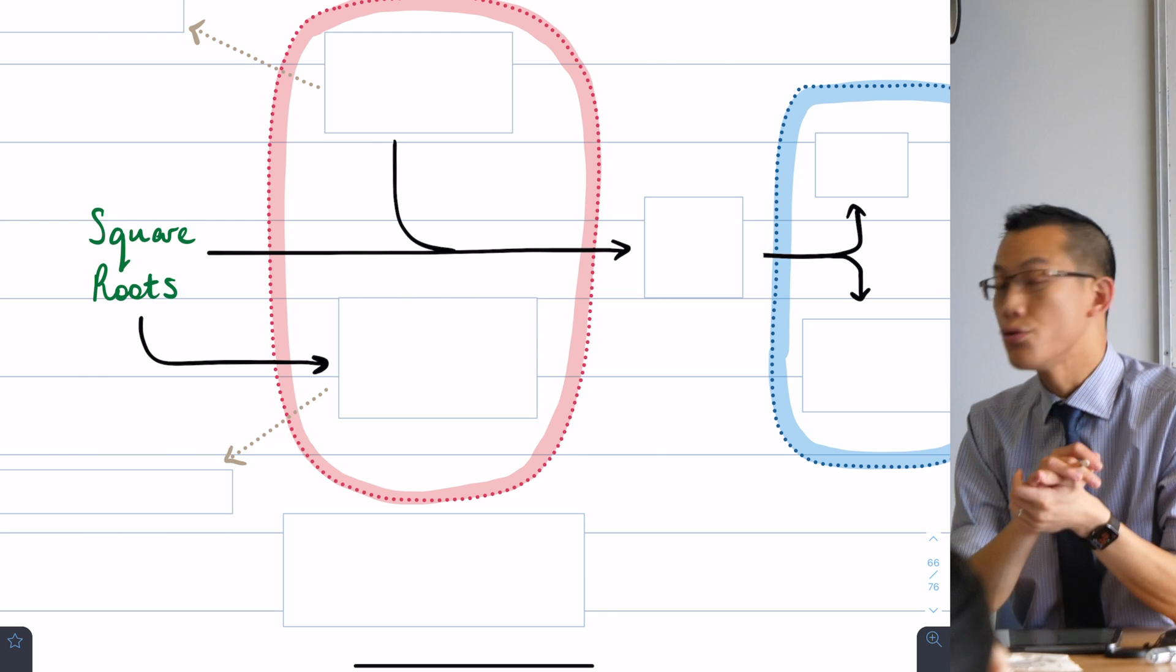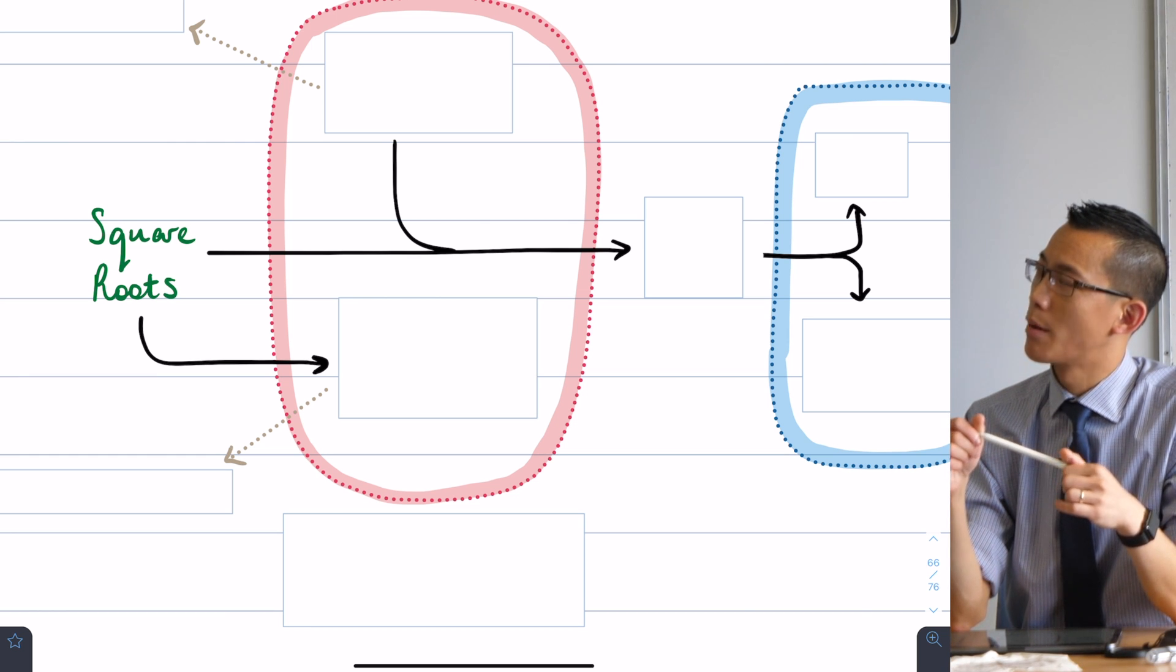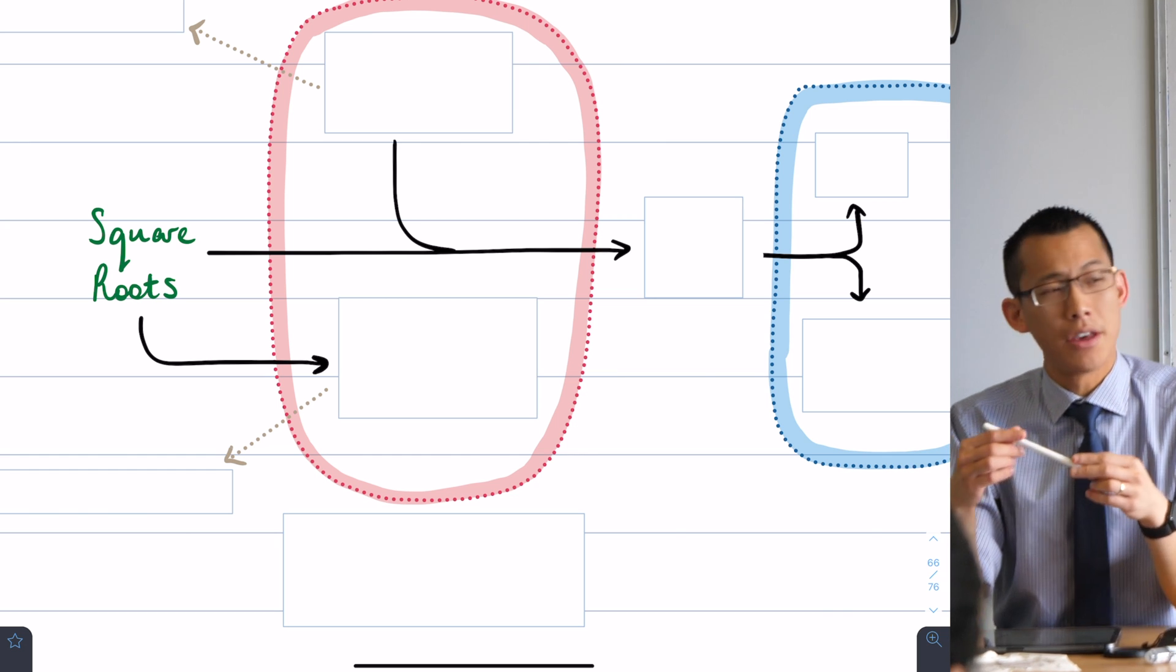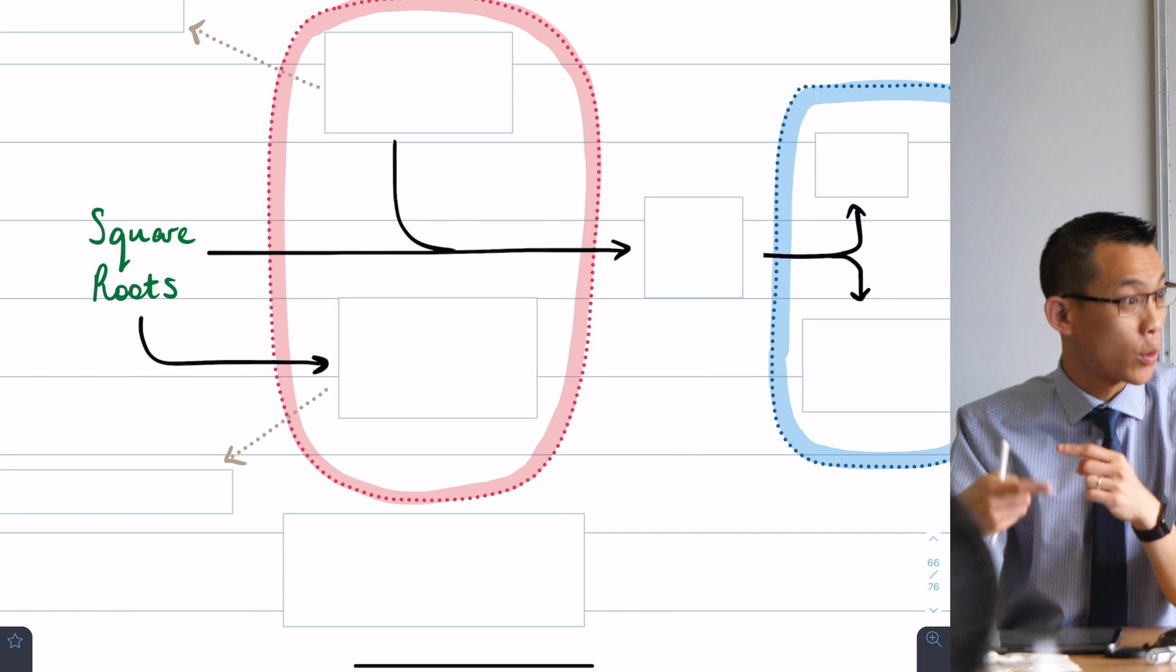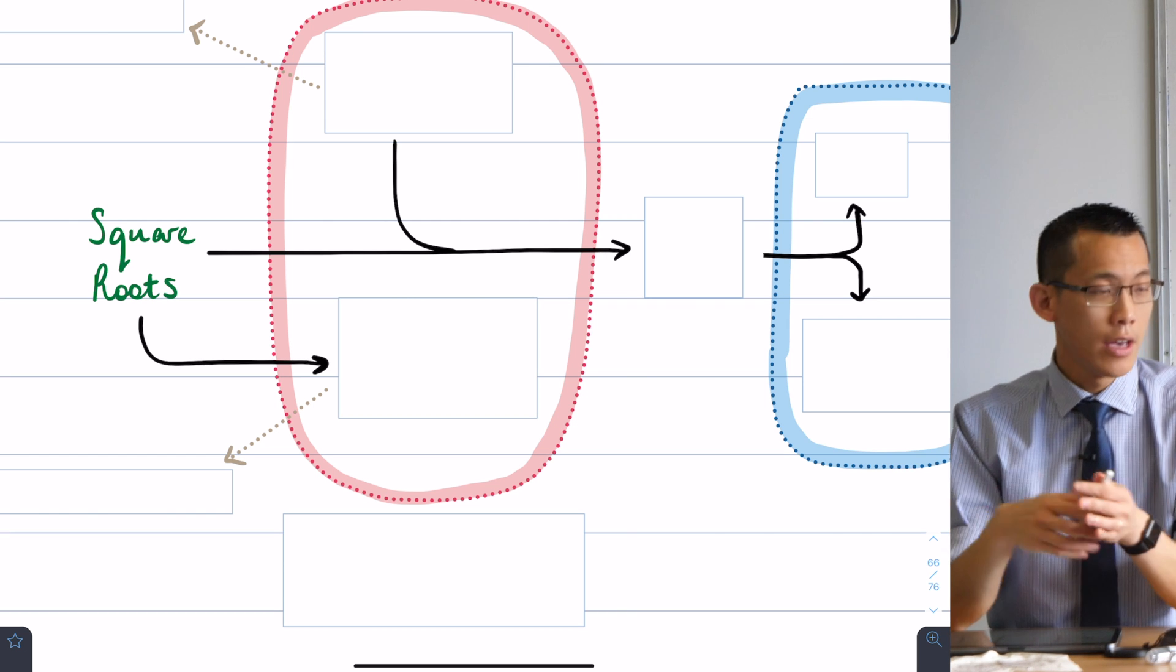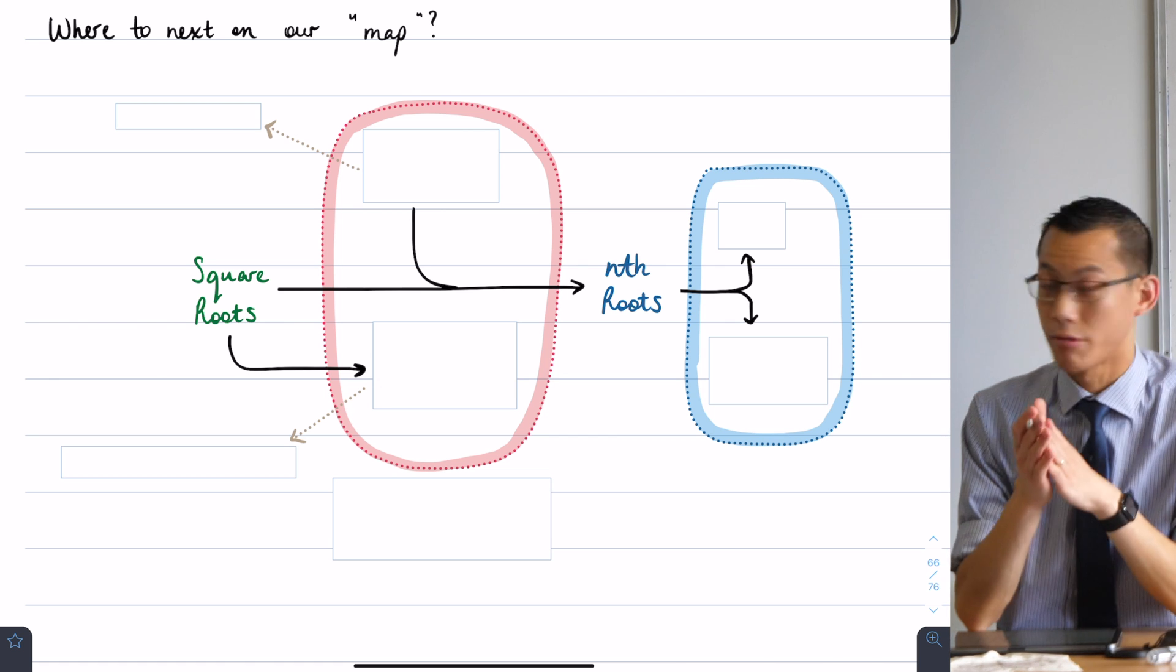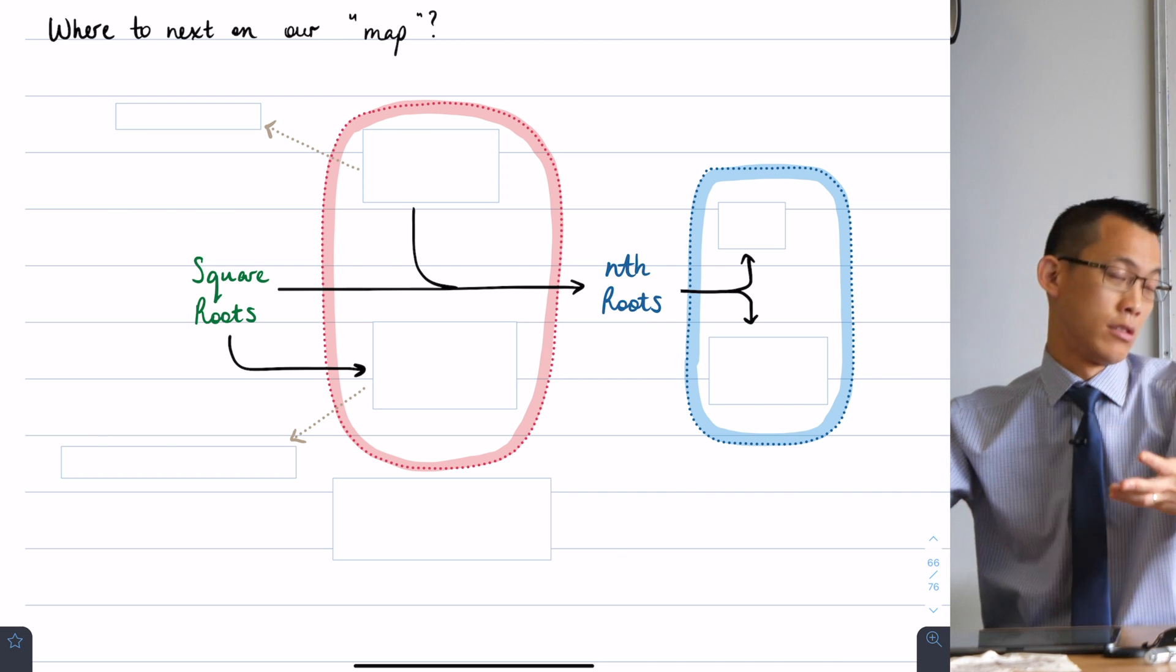For example, you could say the square root of 81 is 9, but you can also say that the fourth root of 81, the number that you multiply by itself four times, is 3. There are square roots, fourth roots, cube roots, and so on. Generally speaking, we call these nth roots because it can be to any degree or any power that you like. It's a natural transition to go from square roots to this general case.